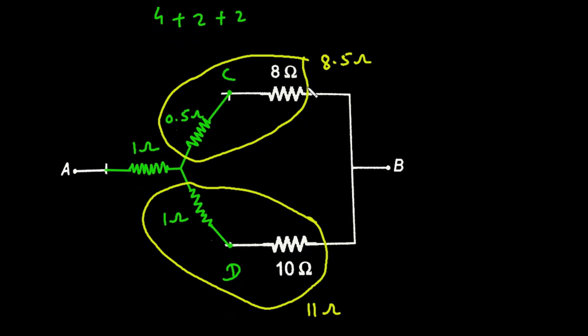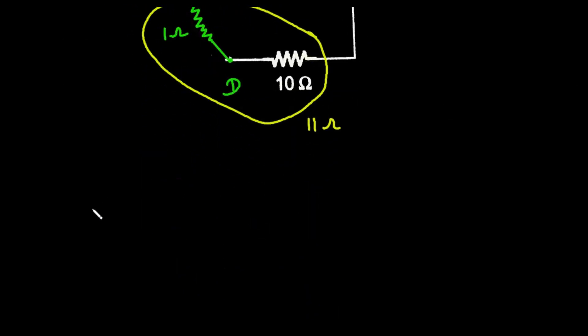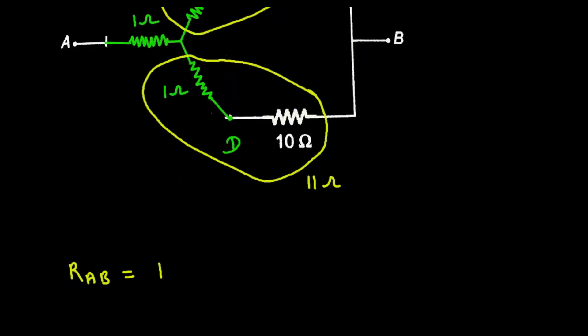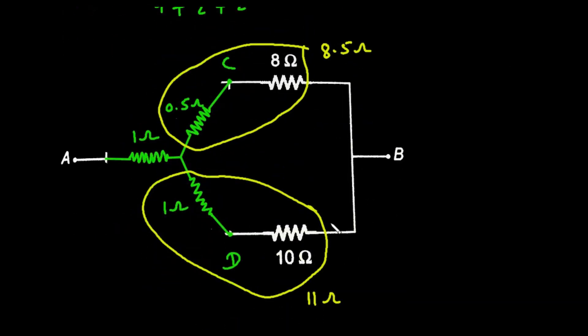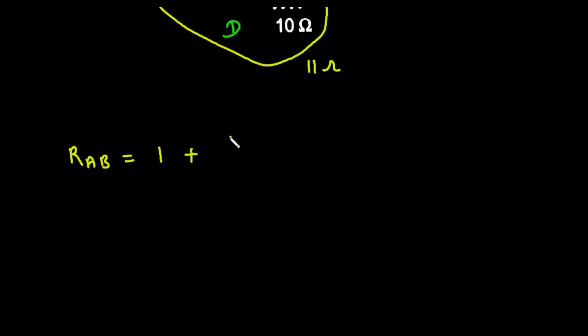Now these two are connected in parallel and they are in series with this 1 ohm. So finally R AB is equal to this 1 ohm and then these two are in parallel 8.5 and 11. So 8.5 into 11 divided by 8.5 plus 11.